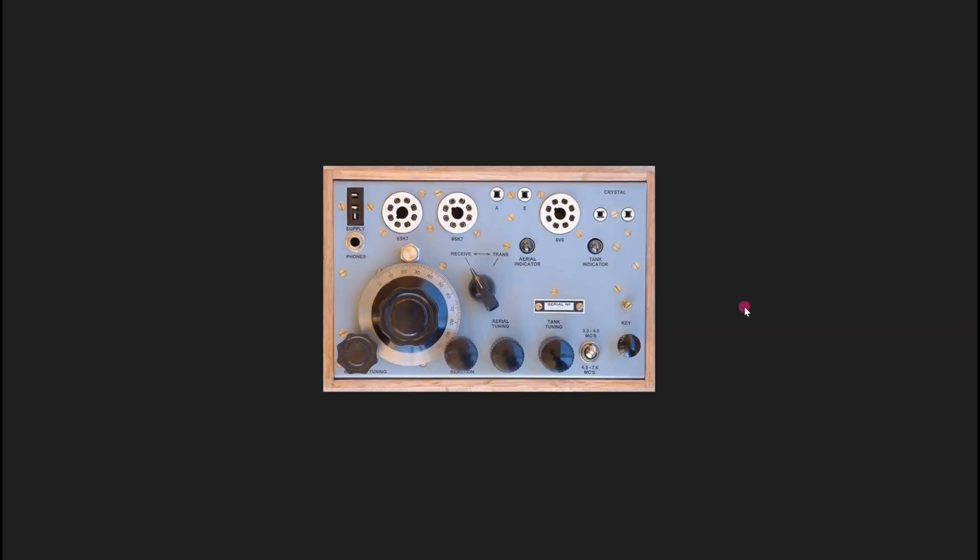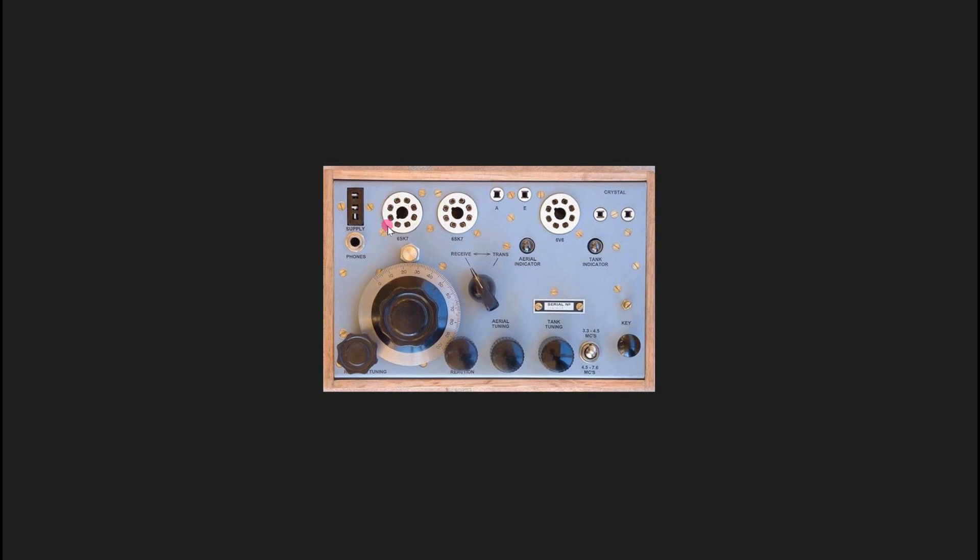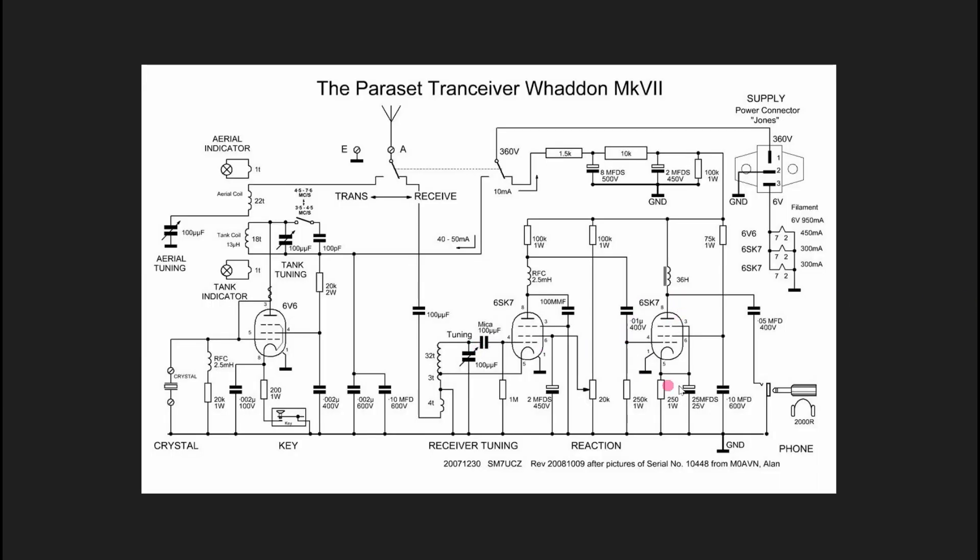Everybody knows about the Paraset. This was developed, of course, in England to be dropped into the occupied countries in World War II. A practical transmitter receiver uses three valves. And the third valve is an audio amplifier. Because this was used with very, very modest antennas, usually just a wire dropped out the window. They needed a little bit extra audio gain with the Paraset. So it does have the extra audio amplifier tube.